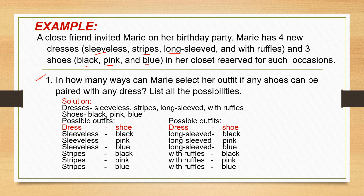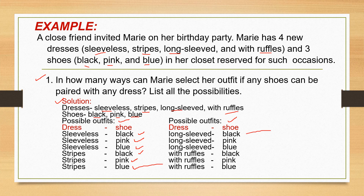List all the possibilities. We have here the solution. Dresses are sleeveless, stripes, long sleeve, and with ruffles. Shoes are black, pink, and blue. The possible outfits are: sleeveless with black, sleeveless with pink, sleeveless with blue, stripes with black, stripes with pink, stripes with blue, long sleeve with black, long sleeve with pink, long sleeve with blue, with ruffles with black, with ruffles with pink, and with ruffles with blue. All in all, we have 12 possible outfits.